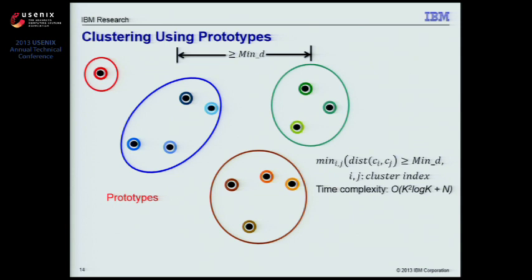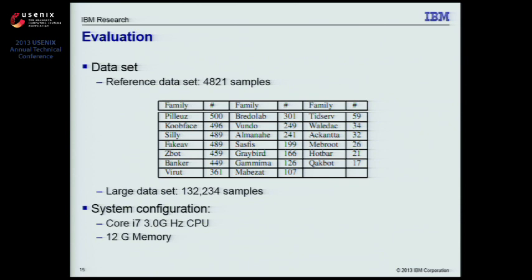We evaluate MaltonX using two datasets. The first is a reference dataset containing about 5,000 malware samples whose labels are derived by security experts in AV companies, making it more reliable. We also collected a large dataset containing over 130,000 samples from an online malware archive, with labels obtained by using AV scanners, which are relatively unreliable. We mostly use the reference dataset to evaluate and fine-tune parameters for MaltonX, and use the large dataset to test scalability.